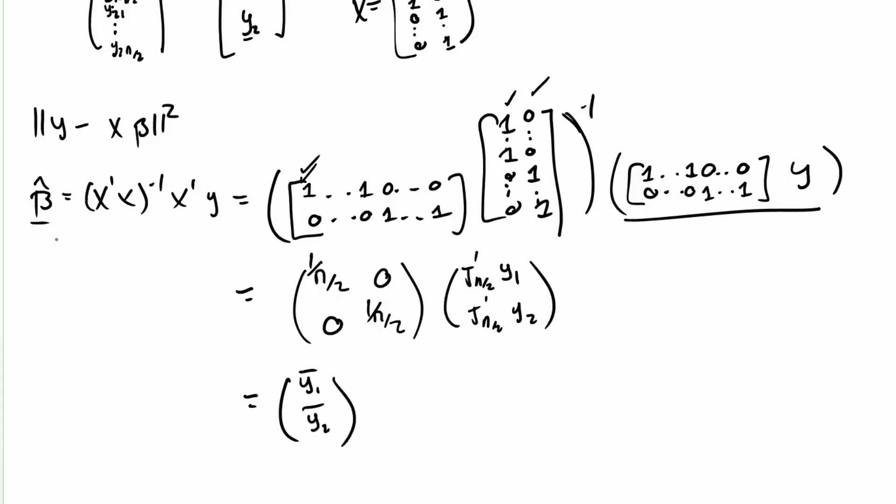If we have an effect, one for group one and a second effect for group two, the likely estimate would have to have turned out to be the average for group one and the average for group two.